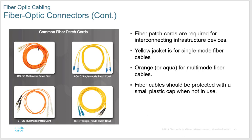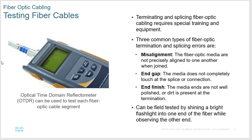Fiber is typically stored in a roll to avoid 90-degree bends that would crack the glass core. Yellow jackets indicate single-mode fiber, orange is for multi-mode. Always put caps on the ends when not in use — you don't want dust or micro-scratches from dragging across a desk.